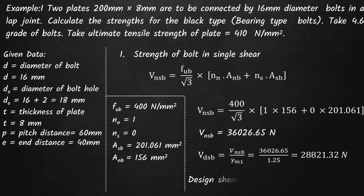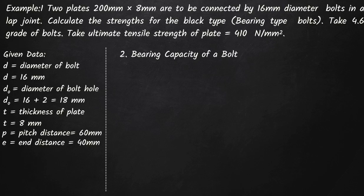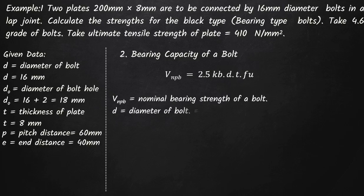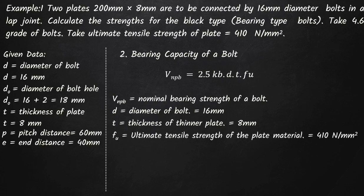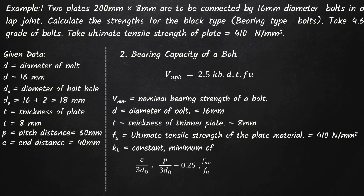Next is the bearing capacity of the bolt. The formula is V_NPB equals 2.5 × k_b × d × t × f_u. Here V_NPB is the nominal bearing strength of the bolt, d is the bolt diameter (16mm), t is the thickness of the thinner plate (8mm) — if two plates are 12mm and 10mm then t would be 10mm. f_u is the ultimate tensile strength of the plate material given as 410 MPa. k_b is a constant which is the minimum of four values: e/3d₀, p/3d₀ minus 0.25, f_ub/f_u, and 1.